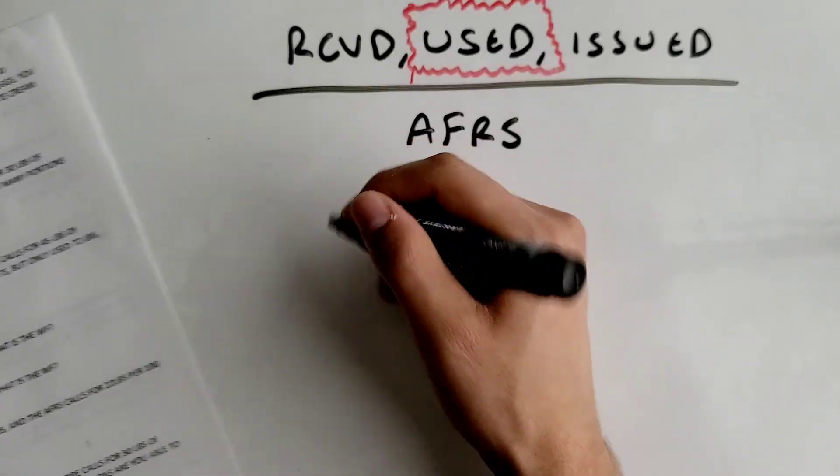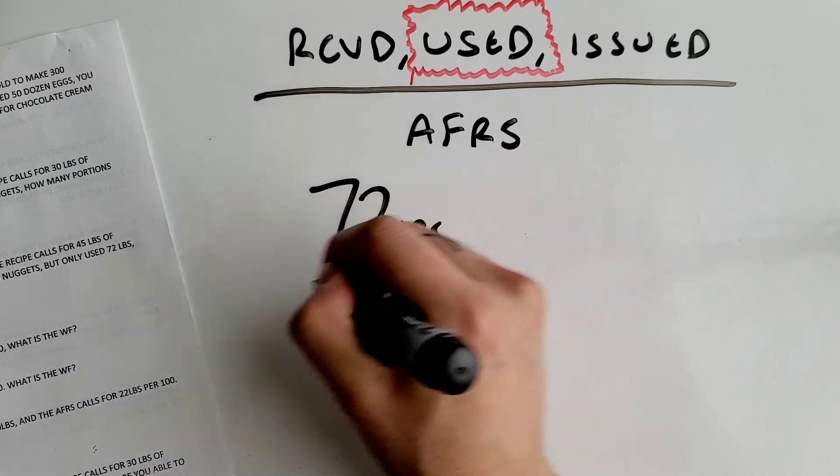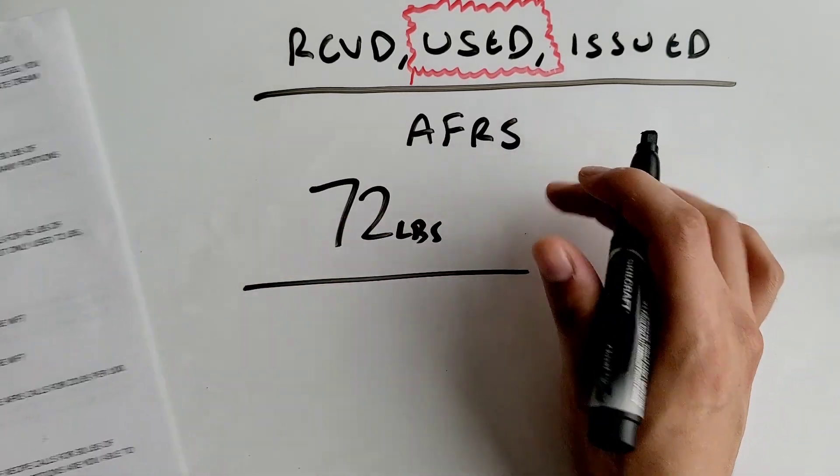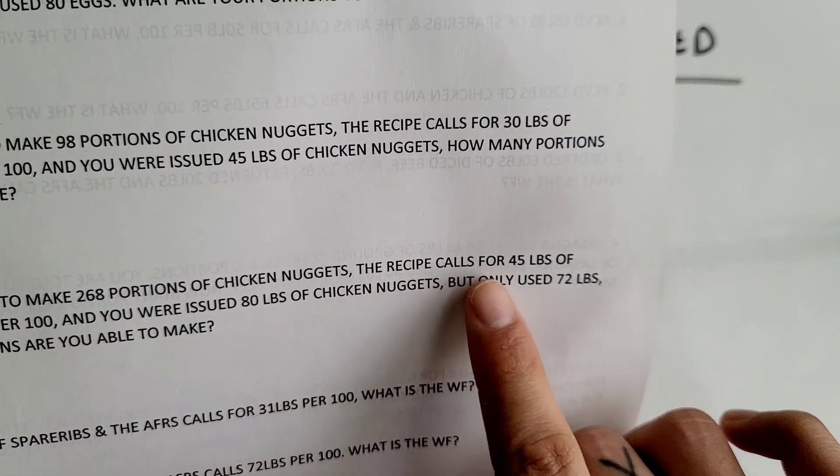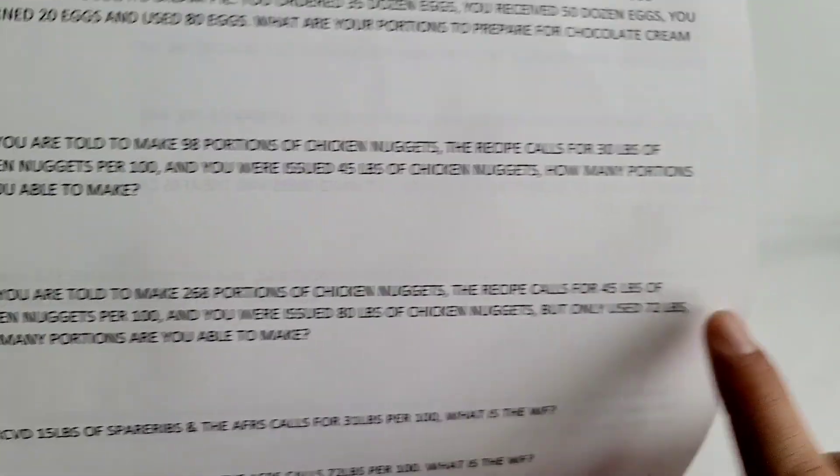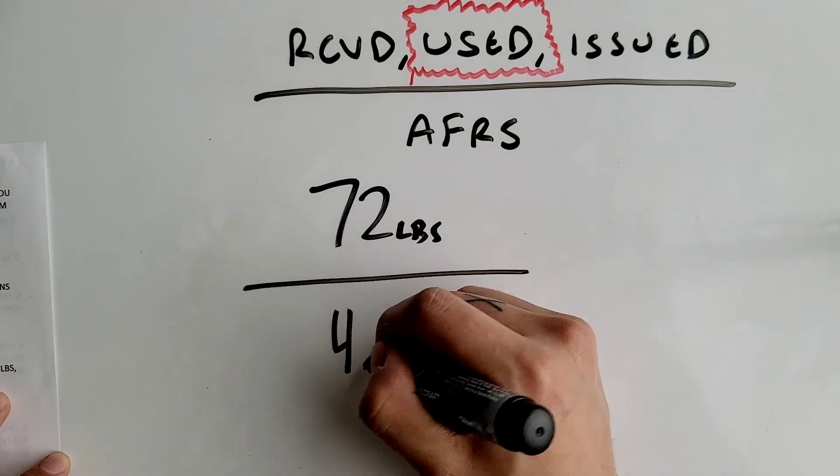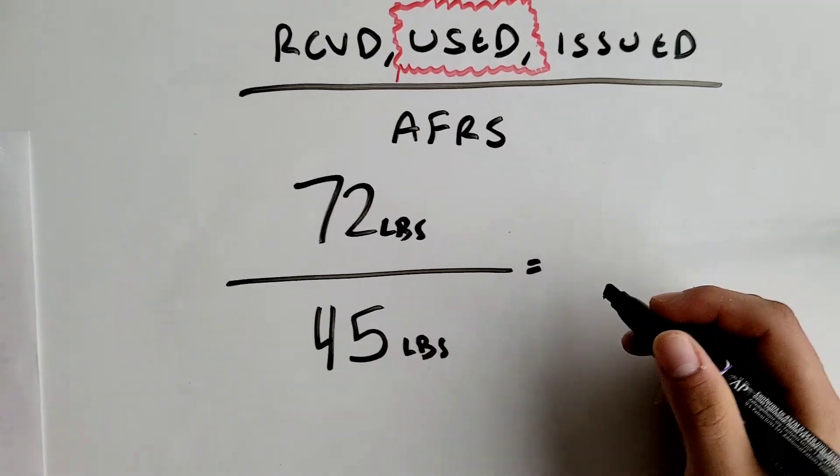So 72 pounds, and you divide that by your AFRS - what the recipe calls for. It says the recipe calls for 45 pounds of chicken nuggets, so we put 45 at the bottom.